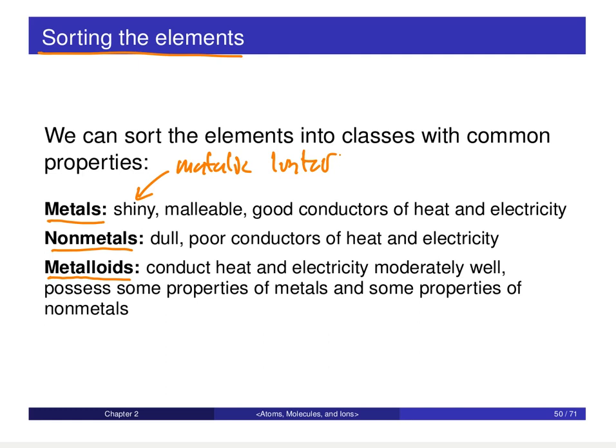Malleable means that you can bend it, shape it, and turn that metal into any different form you want. And a good conductor of heat and electricity means that thermal energy or electrical current readily passes through that substance. So metals share all of these properties.